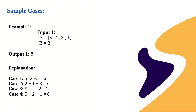Let's understand with the help of a sample case. Suppose the input array is [5, -2, 3, 1, 2] and B equals 3. We need to pick 3 elements from either end. The output is 8.